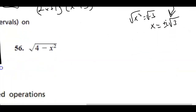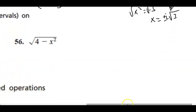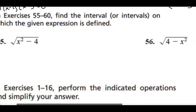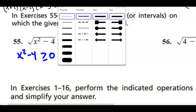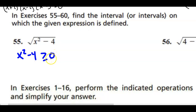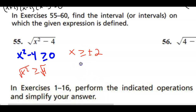Moving on — this is a domain problem. Find the interval where the expression is defined. For a radical expression, set the expression underneath the radical greater than or equal to zero, because the smallest possible square root is zero. Adding 4 to both sides and taking the square root of both sides gives x is greater than or equal to plus or minus 2.